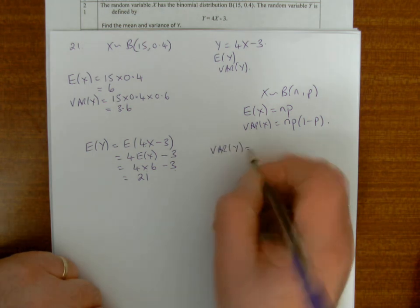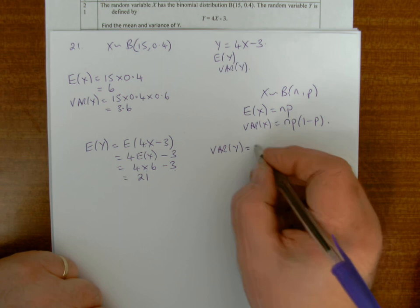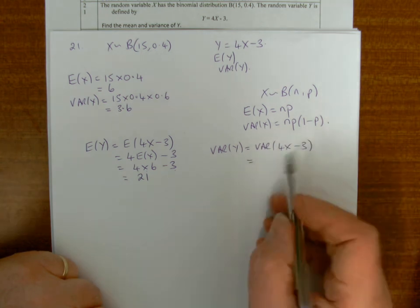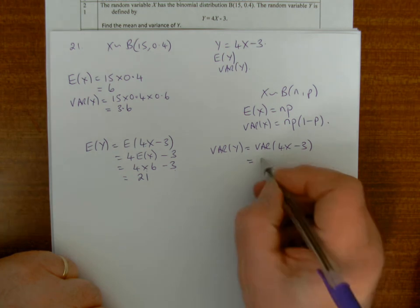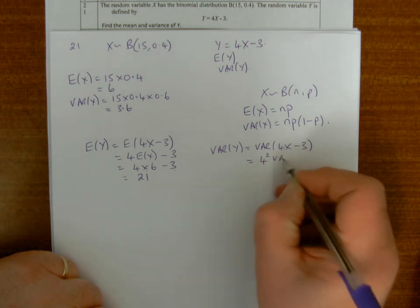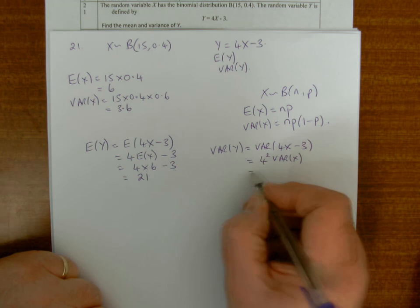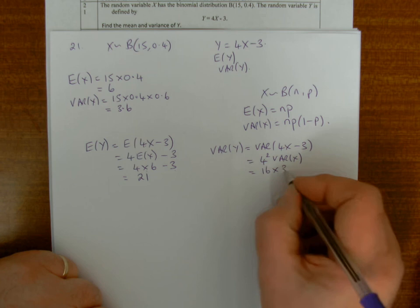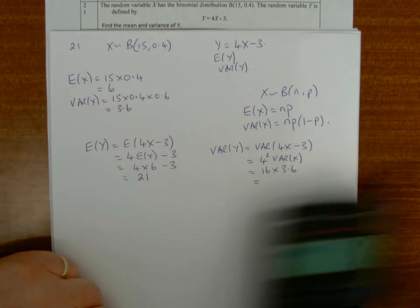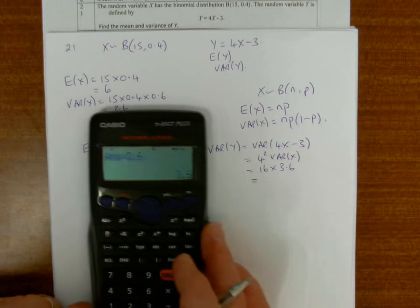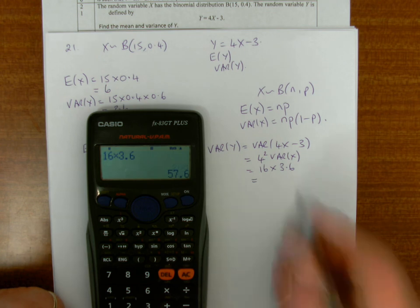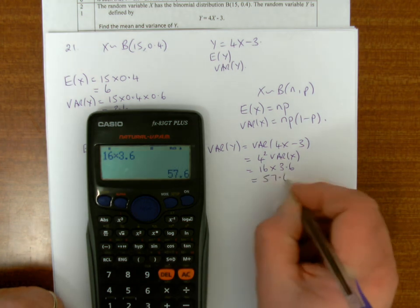And the variance of Y is 4 squared times Var(X). 4 squared is 16 times the variance of X, which is 3.6. And to work that out, 16 times 3.6 is 57.6.